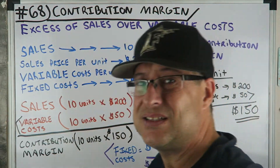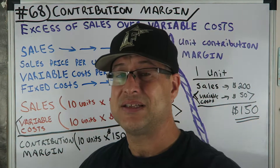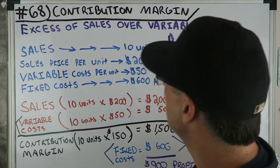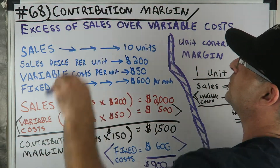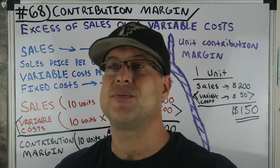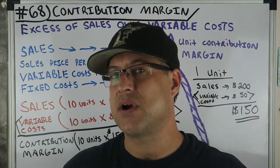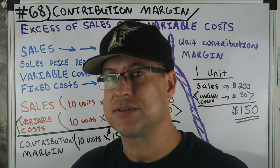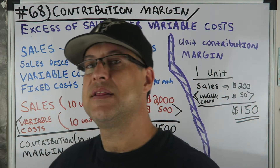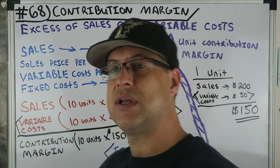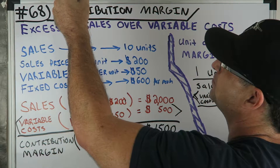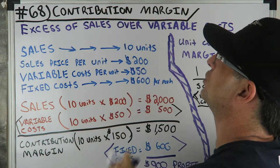This is number 68. I just can't believe I've done 67 before this one. This one we're doing contribution margin. In 67 we were doing fixed and variable costs. We're using the same numbers in this one, number 68.